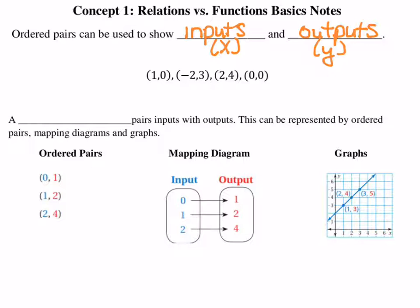If you look at the following set here, we have the ordered pair (1,0), (-2,3), (2,4), and (0,0). The inputs are going to be things like your 1, your negative 2, your 2, and your 0 here. We call these independent variables. They're the things that we can change.